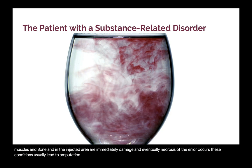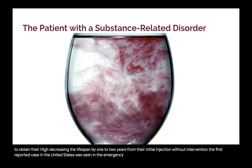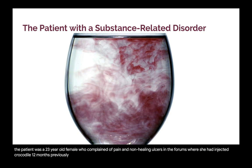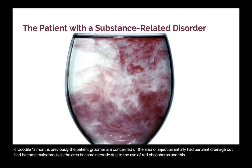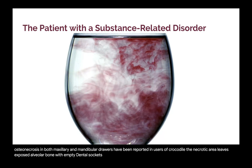Since desomorphine has a short half-life, crocodile users must inject often to obtain their high, decreasing their lifespan by one to two years from their initial injection without intervention. The first reported case in the United States was seen in the emergency department of Johns Hopkins School of Medicine in Baltimore — a 23-year-old female who complained of pain and non-healing ulcers in the forearms where she had injected crocodile 12 months previously. The area had initially had purulent drainage but became malodorous as it became necrotic due to the use of red phosphorus. Cases of jaw osteonecrosis in both maxillary and mandibular jaws have been reported in users of crocodile; the necrotic area leaves exposed alveolar bone with empty dental sockets. Surgical removal of necrotized areas in crocodile users who have gone through withdrawal has had some cases with low rates of recurrence.